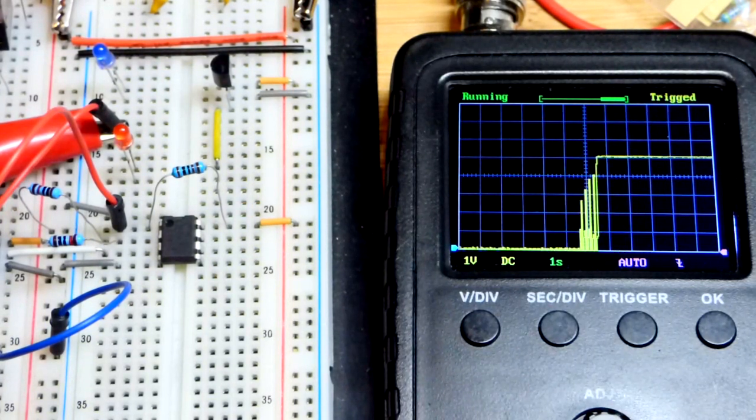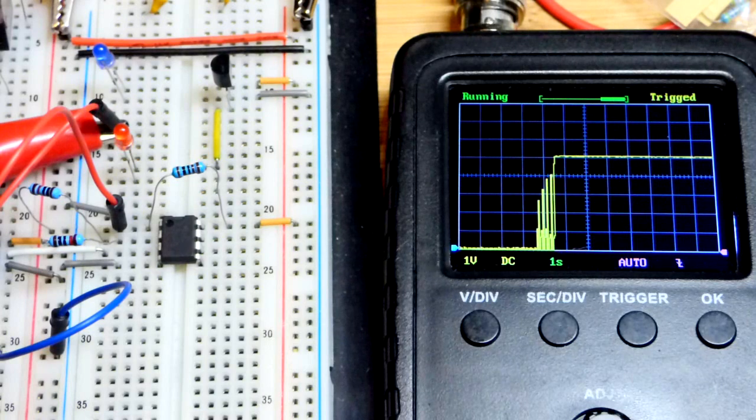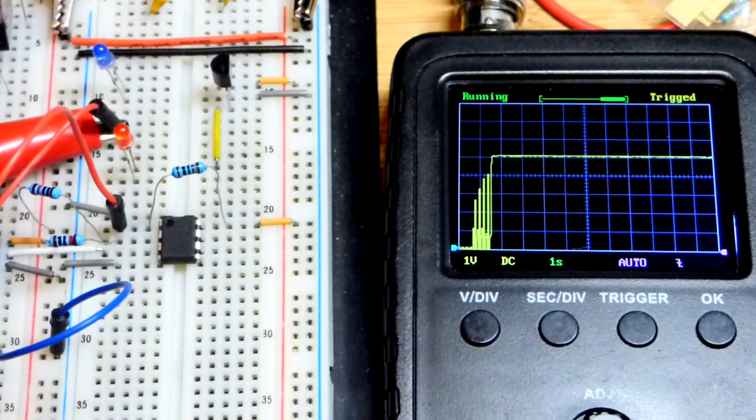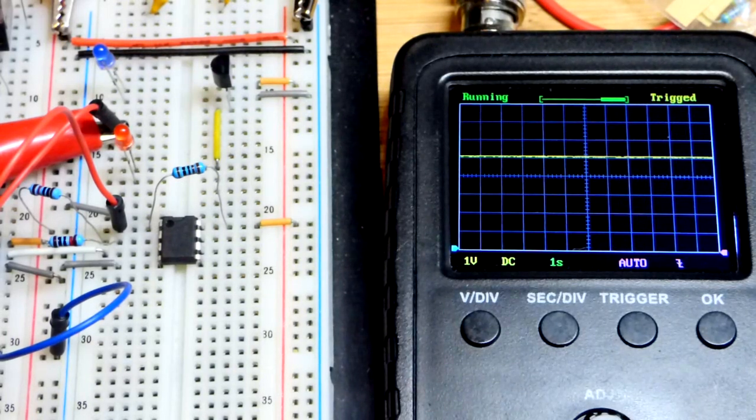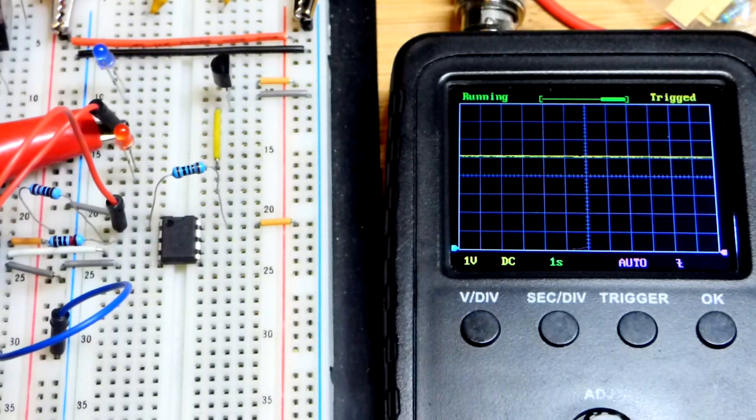In any case, that's it for the LM393 as a non-inverting comparator. It is a pretty simple component once you get used to it. I hope you enjoyed. Make sure you check out one of the other videos I'm posting on this screen. Click like, subscribe, the bell. All that, donate to Patreon if you can. That helps out the most. I got links down in the description. Thanks just for watching though, if that's all you do. I will see you in the next video. Thank you.